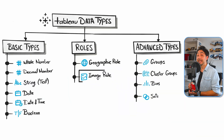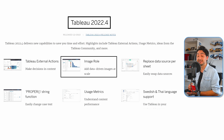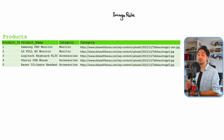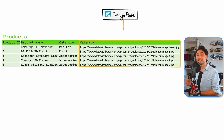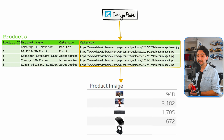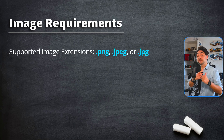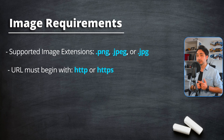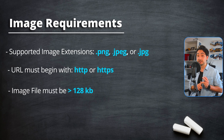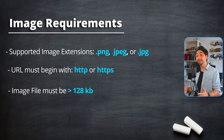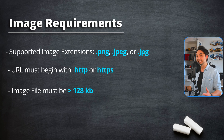Now let's talk about the image role. This is brand new — Tableau introduced it in 2022. If your field stores URLs pointing to images, you can assign this field to the image role with the URL to show images in visualizations. Tableau has some requirements: only three image extensions are supported, the URL must begin with http or https, the maximum number of images per field is 500, and the image size must be less than 128 kilobytes. These requirements may change since it's a completely new feature.